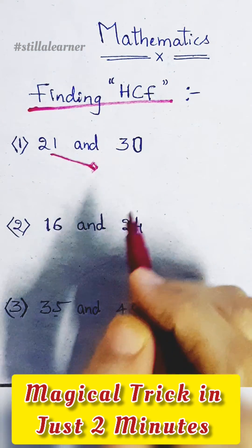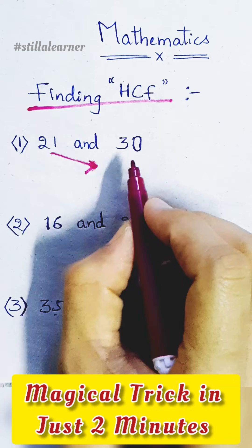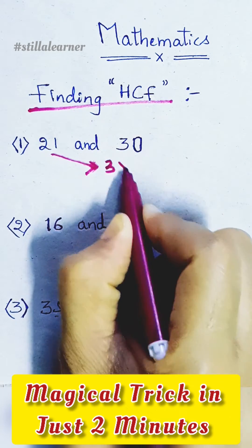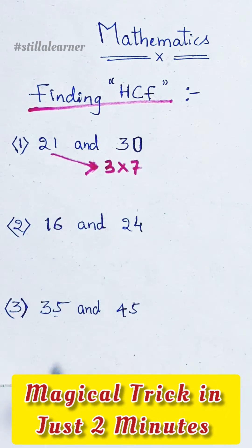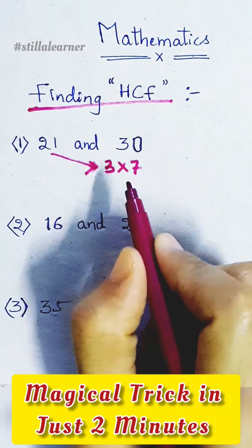The factors of 21: start from table 2. If 21 is not mentioned in table 2, then we go for table 3. So the factors of 21 is 3 into 7.